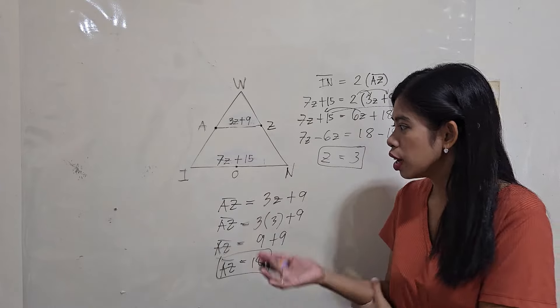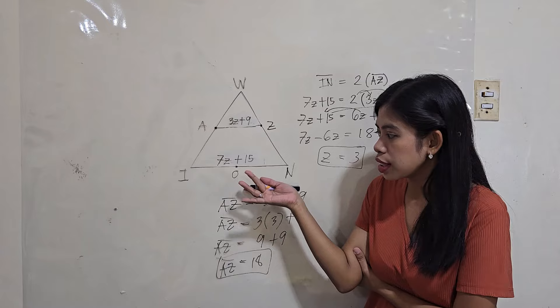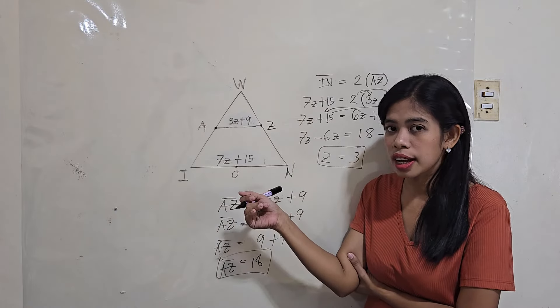Now, actually, we don't need to solve the measure of the third side. We just have to double it, right? So, 18 times 2. That's 36. That's the measure of the third side.